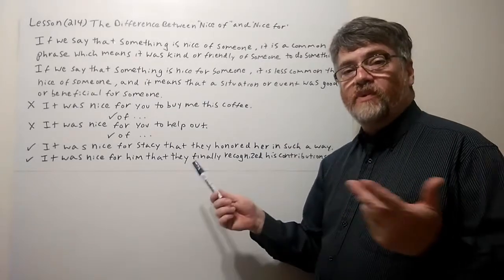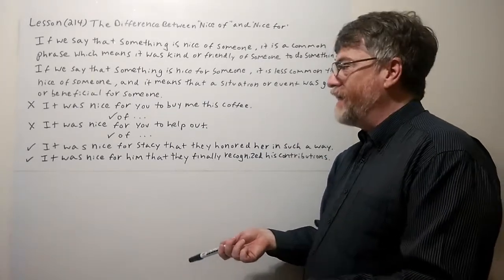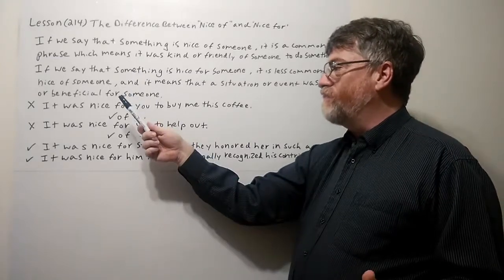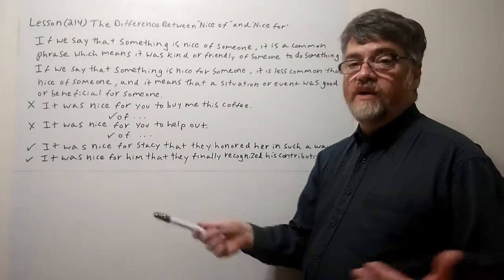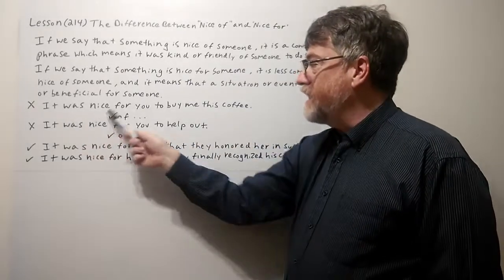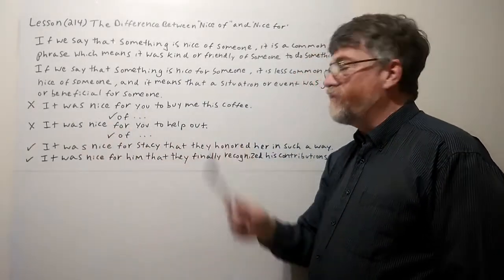Let's look at the first example where a student might make a mistake. This is a situation where it's more likely that the student might use for when they're supposed to be using of. So here with the X, this is wrong: It is nice for you to buy me this coffee. No.